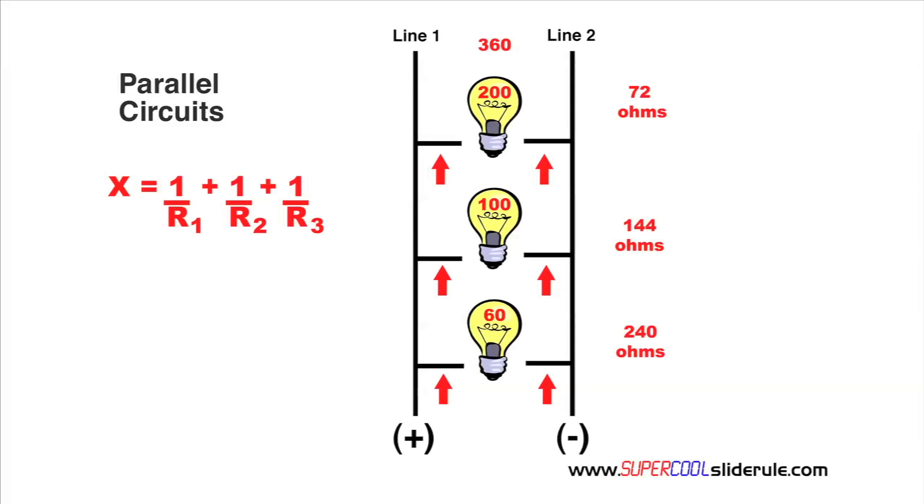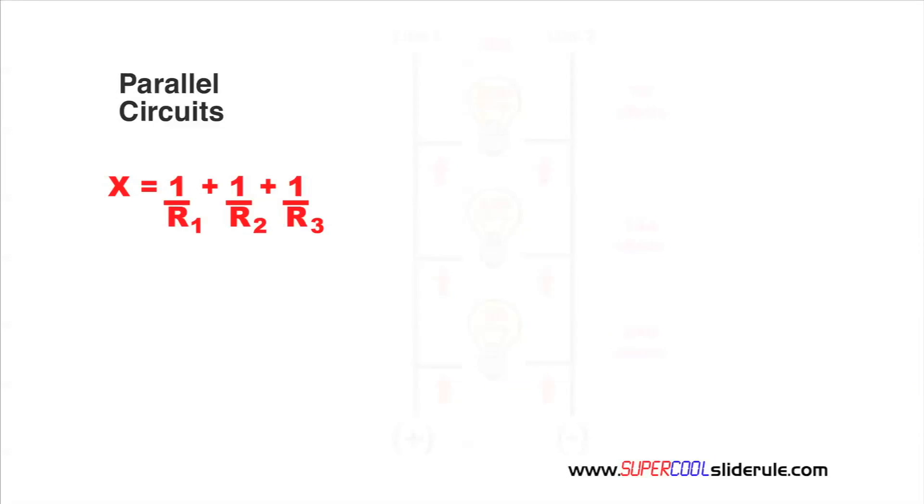Now, if we set these up in fractions, we should all remember that to add fractions, the first thing we have to do is get a common denominator. The easiest way to do that is to multiply each of your denominators together.